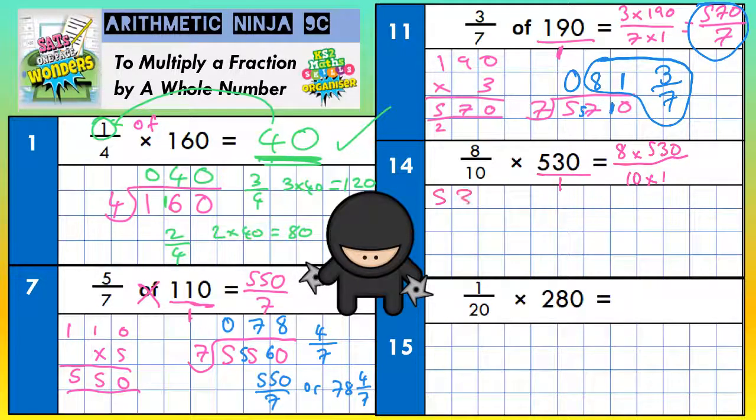So 8 lots of 530, top times top, 8 nothings are nothing, 8 threes are 24, put the 4 in, carry the 2. 8 fives are 40, plus the 2 is 42, so we've got 4,240 along the top line, and the bottom is going to be 10 times 1, so just 10.